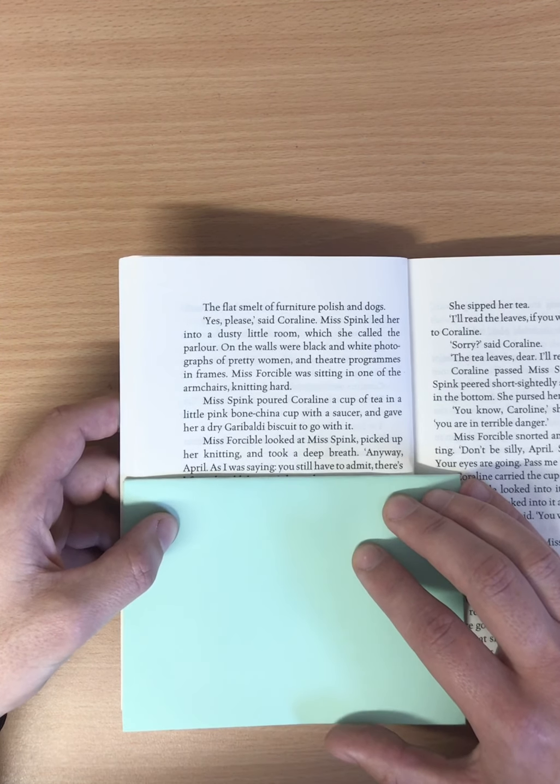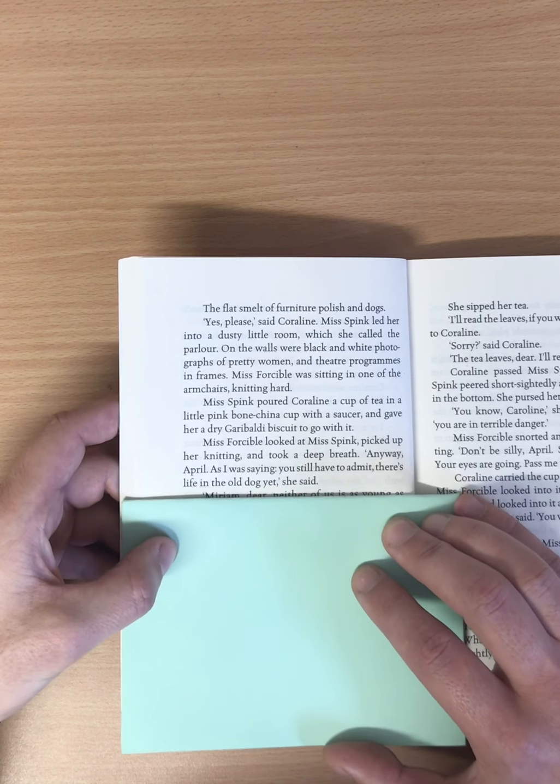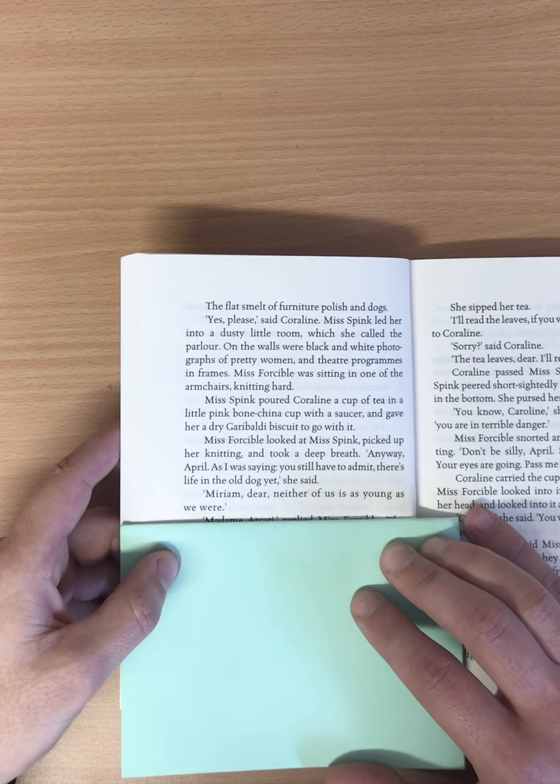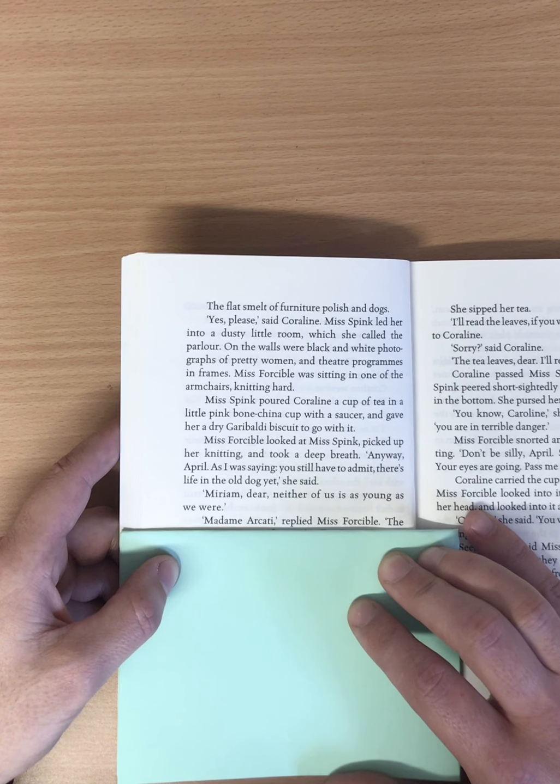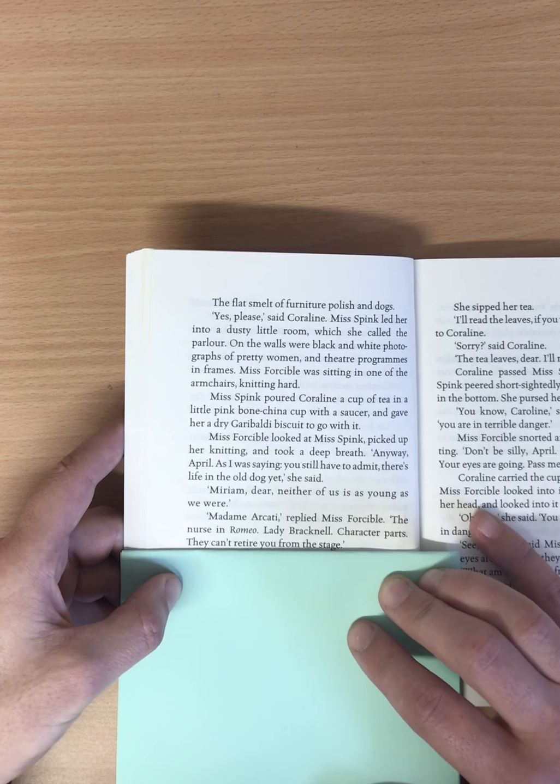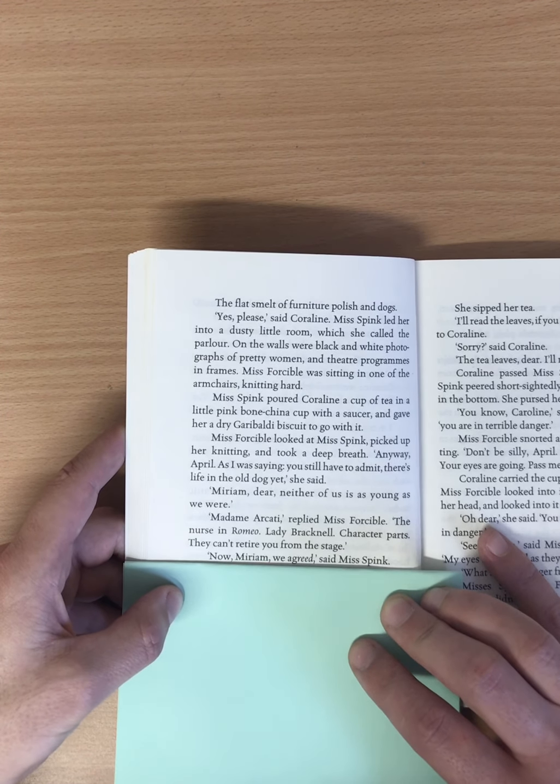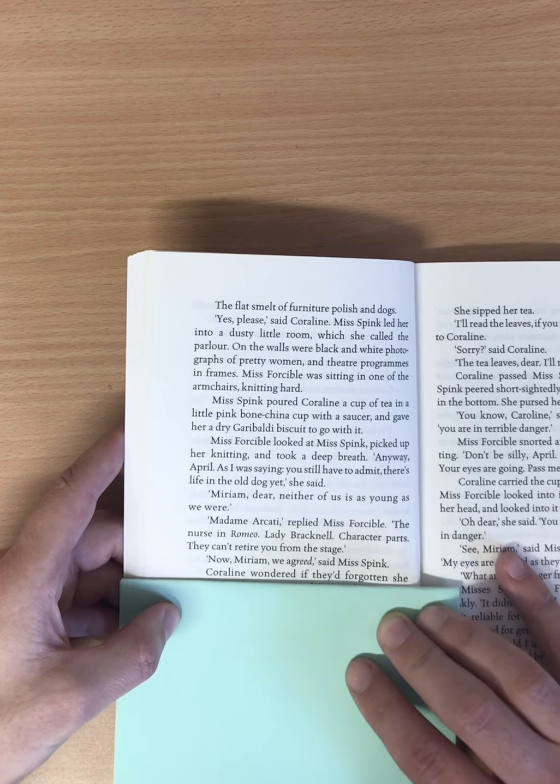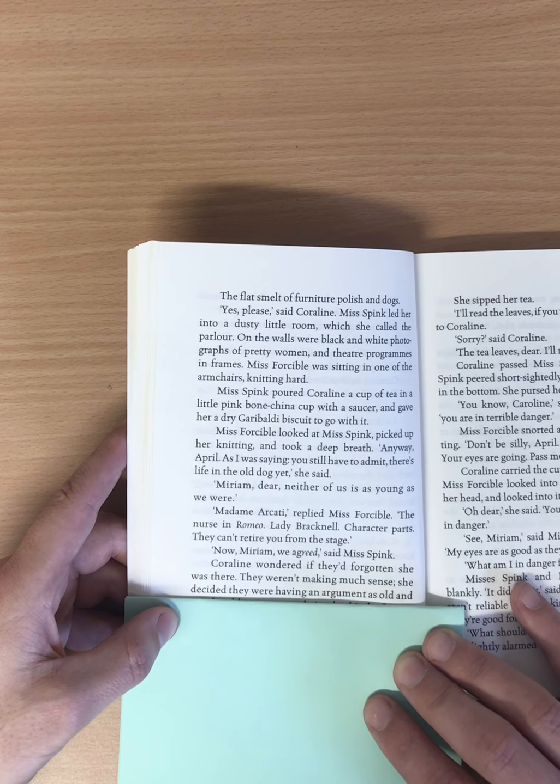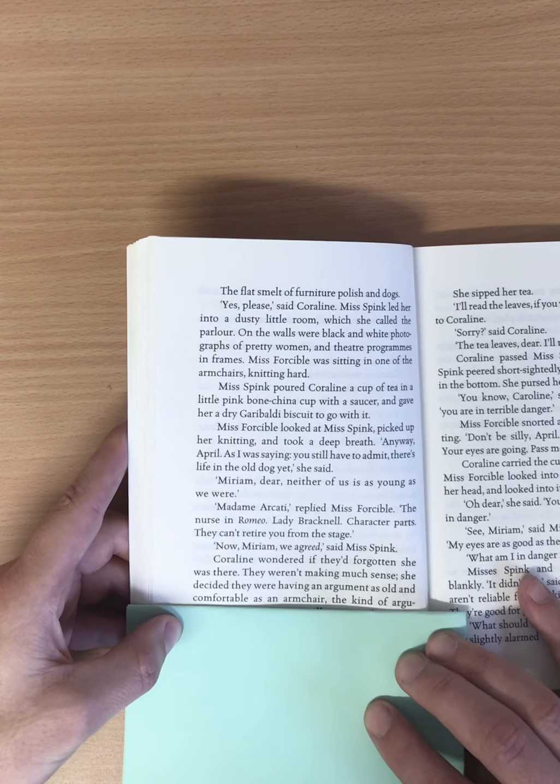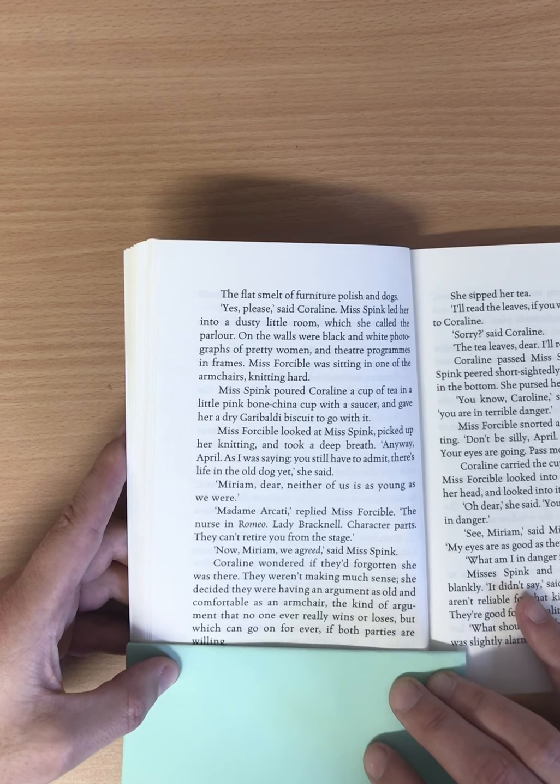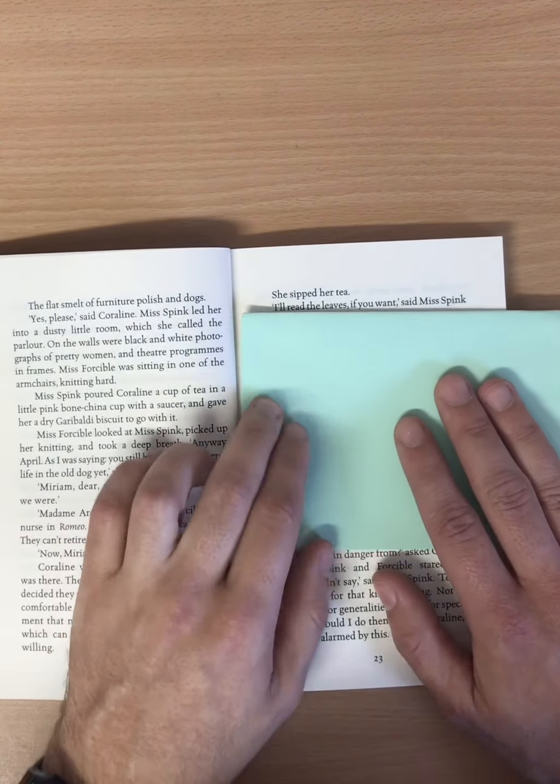Miss Spink led her into a dusty little room, which she called the parlour. On the walls were black and white photographs of pretty women and theatre programmes in frames. Miss Forcible was sitting in one of the armchairs, knitting hard. Miss Spink poured Coraline a cup of tea in a little pink bone china cup with a saucer and gave her a dry Garibaldi biscuit to go with it. Miss Forcible looked at Miss Spink, picked up her knitting and took a deep breath. Anyway, April, as I was saying, you still have to admit, there's life in the old dog yet, she said.